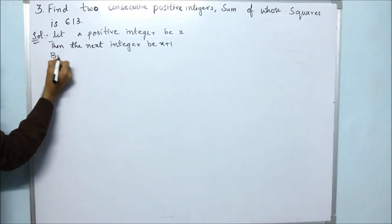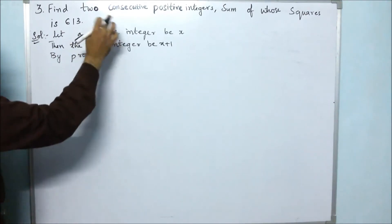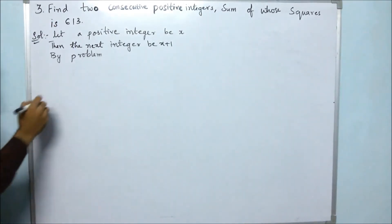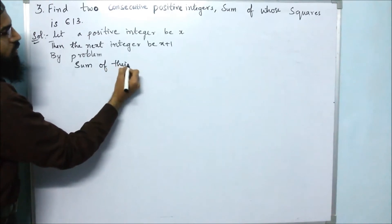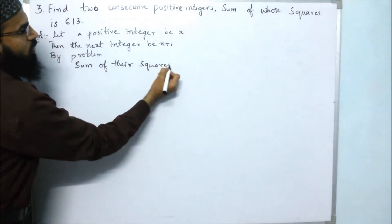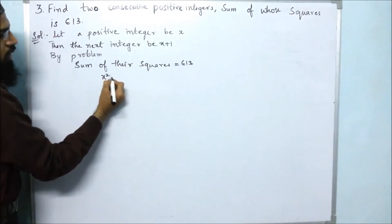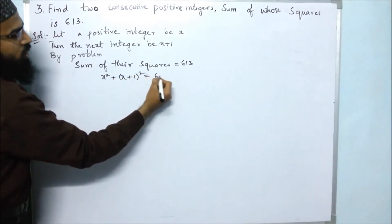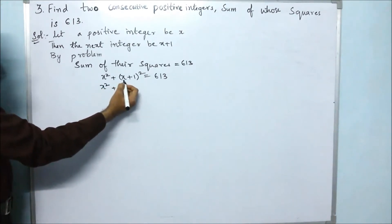By the problem, sum of their squares is 613. So by problem, sum of their squares is 613. Let us do the square and add their squares equals 613. So x² plus (x+1)² = 613. If you see, it is in the form of (a+b)².